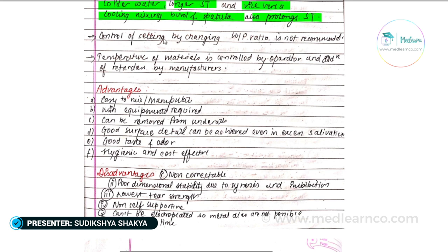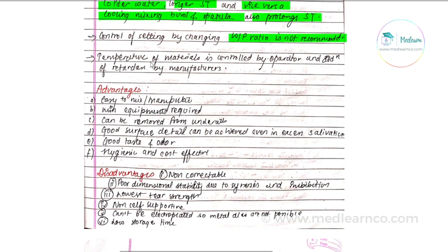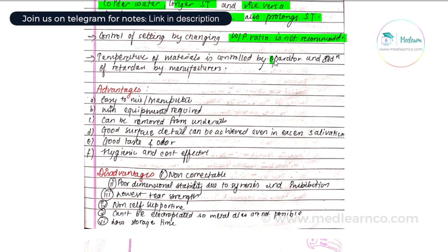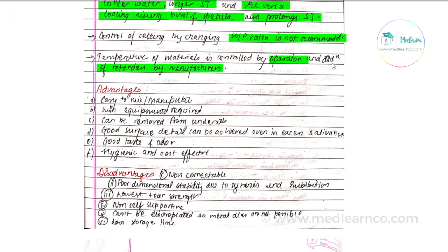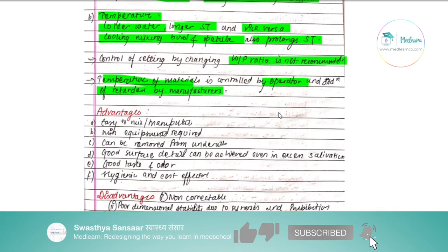Controlling setting time by changing the water-to-powder ratio is not recommended. Temperature change is widely accepted and is controlled by the operator. Addition of retarders such as trisodium phosphate is done by the manufacturer.